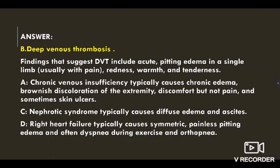The answer is deep venous thrombosis, because the findings that suggest deep vein thrombosis include acute pitting edema in a single limb, usually with pain, redness, warmth and tenderness. Chronic venous insufficiency typically causes chronic edema, brownish discoloration of the extremity, discomfort but not pain, and sometimes skin ulcers. Nephrotic syndrome typically causes diffuse edema and ascites. Right heart failure typically causes symmetric painless pitting edema and often dyspnea during exercise and orthopnea.